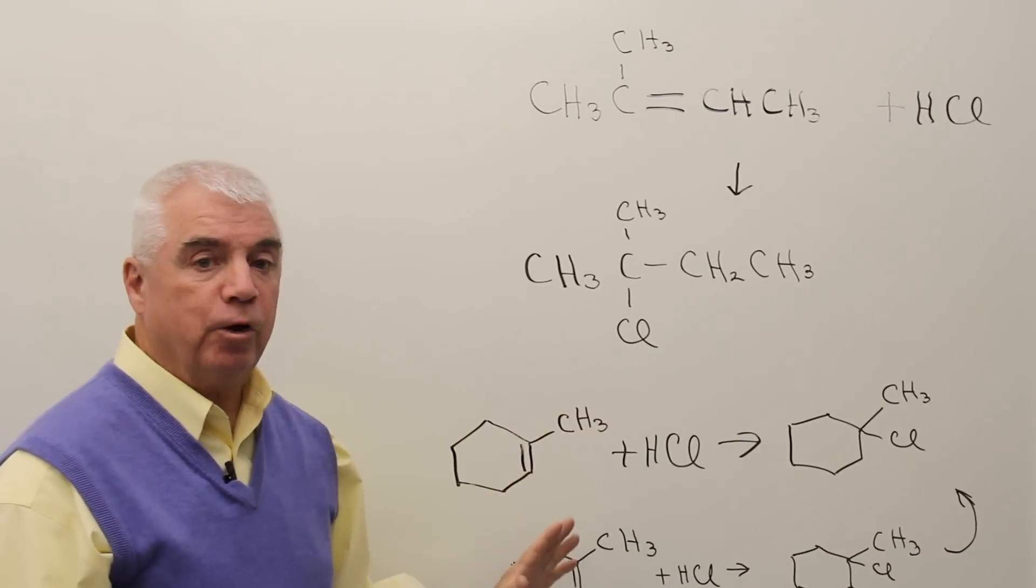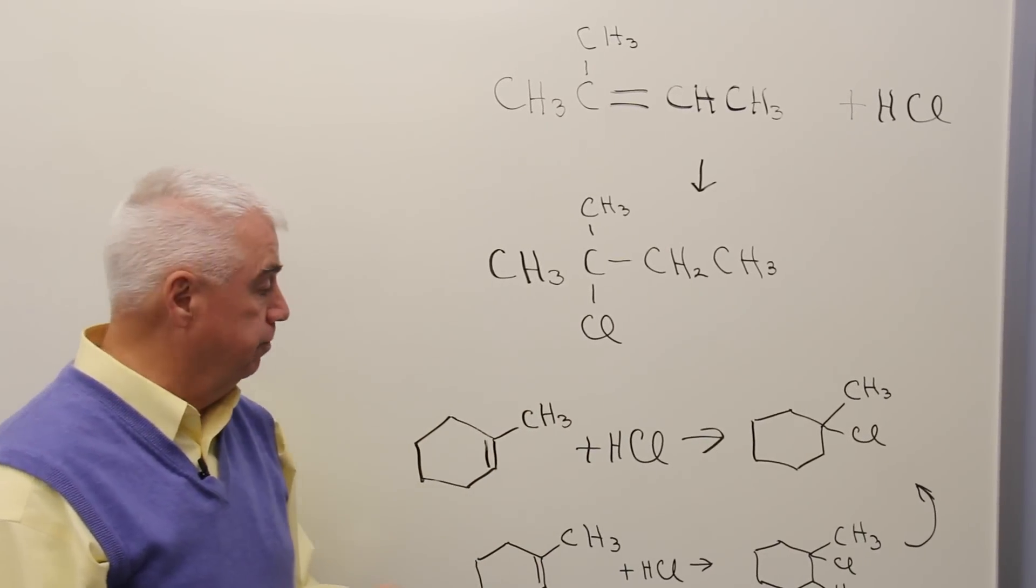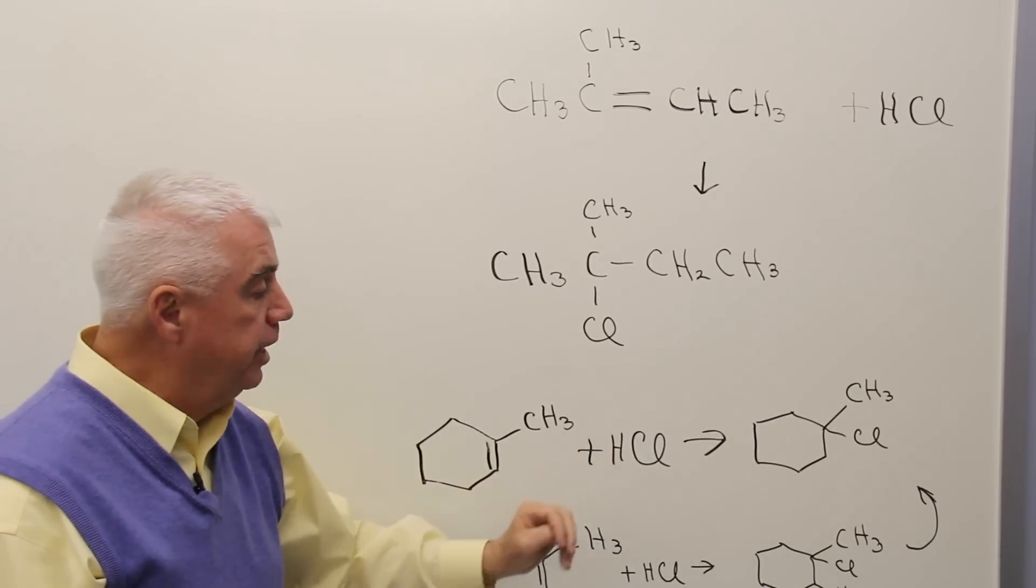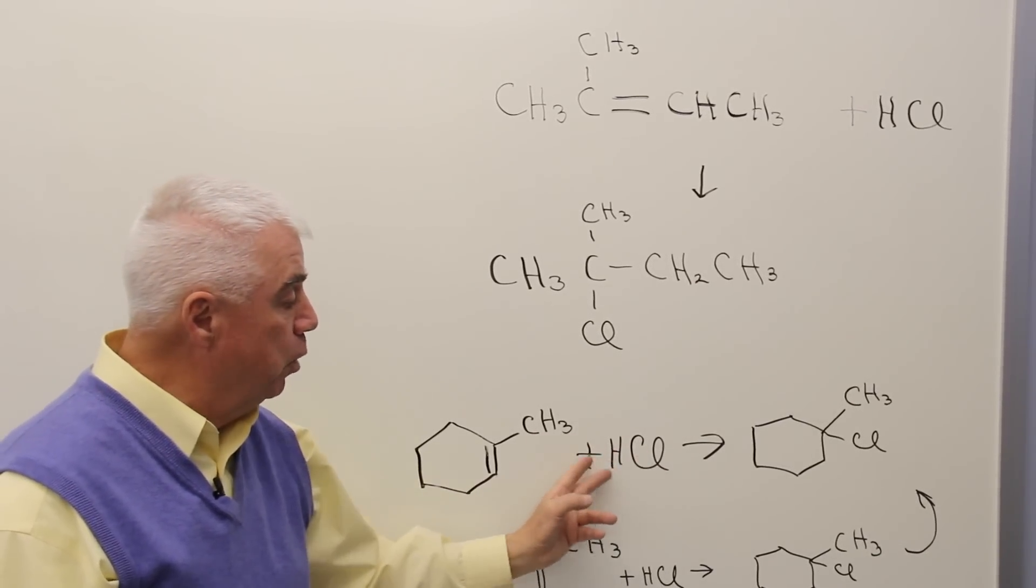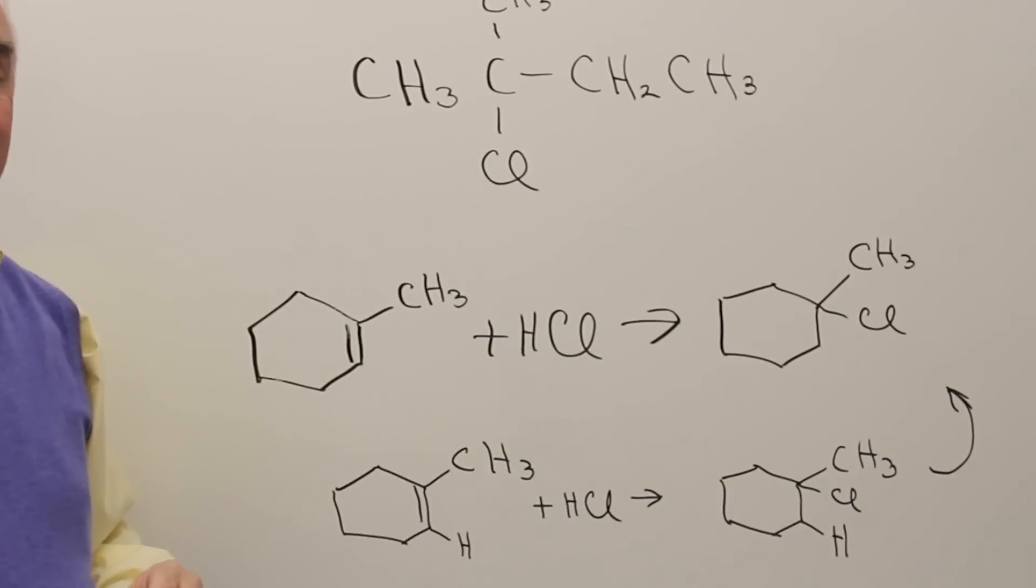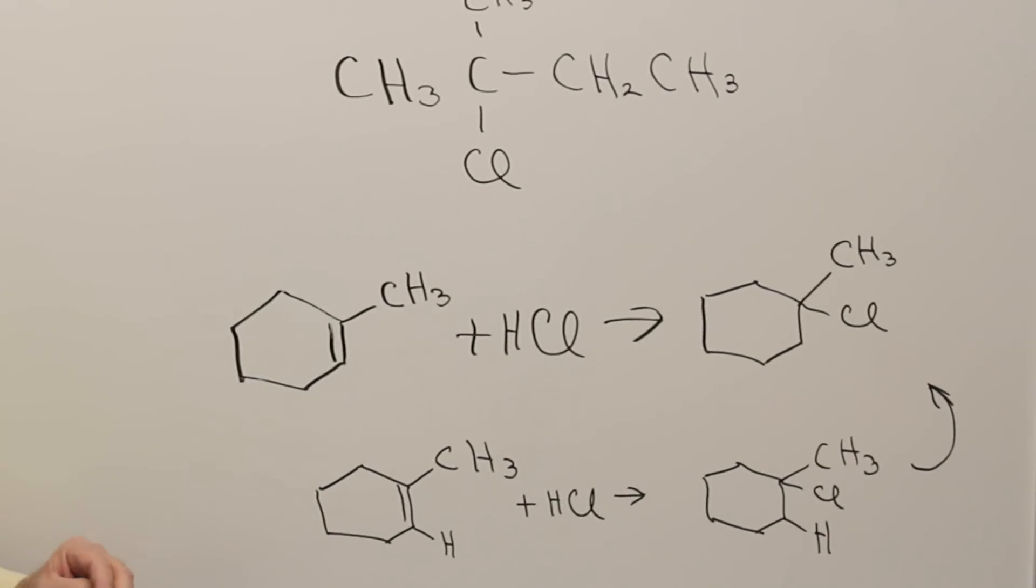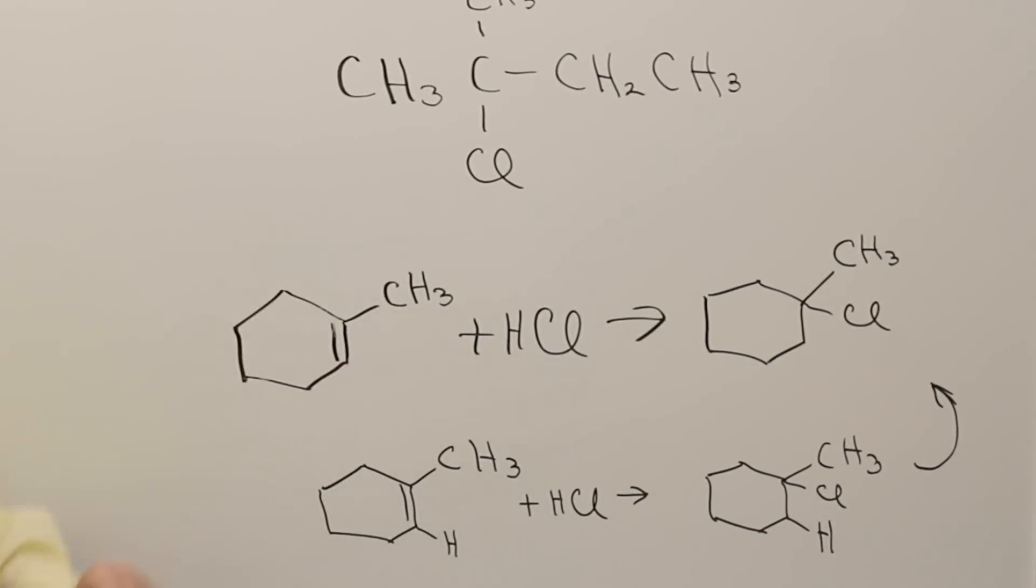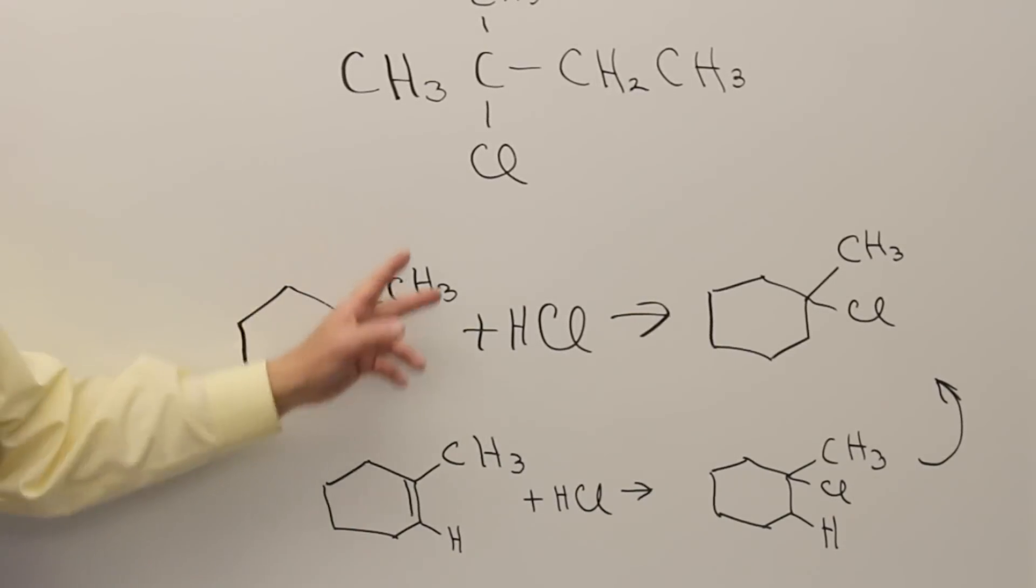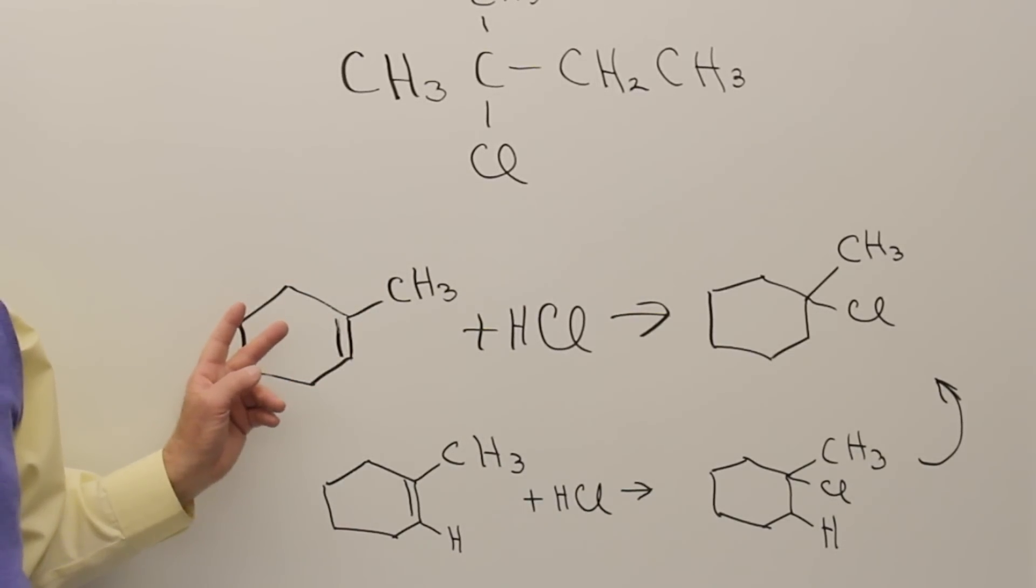Let's try that same reaction with the cyclic structure. Carbon-carbon double bond, an addition reagent. I see that both halves are not the same. So that should trigger the thought of Markovnikov's rule. And now the cyclic structure is a little bit tougher than the open chain structure, because we haven't shown the hydrogens around the ring. And let's put those in. At this position, there'd still be a hydrogen there.